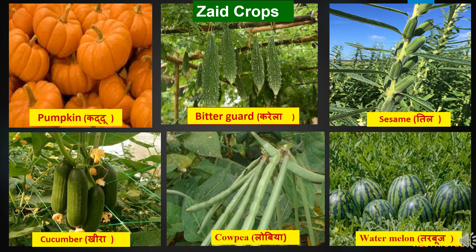Other crops grown under Zaid season include pumpkin, bitter gourd, sesame, cucumber and watermelon.